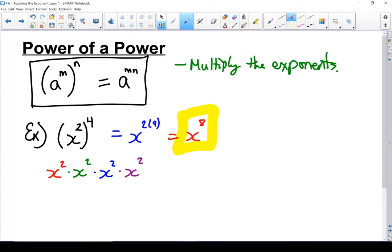Now I can take it even a step further. x squared is the same as x times x. The other x squared is x times x. And the next x squared is x times x. And the last x squared is x times x. Count them all up. I've got 8 x's all multiplied together.